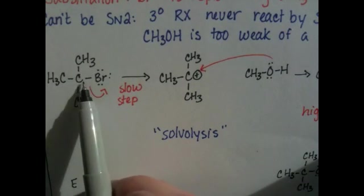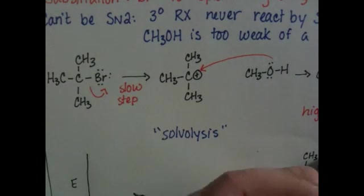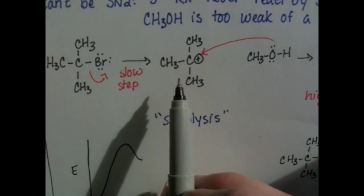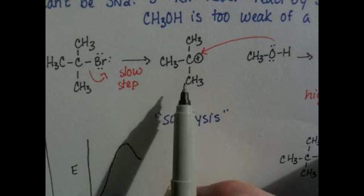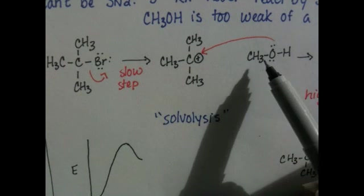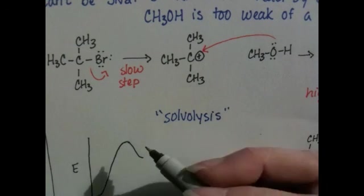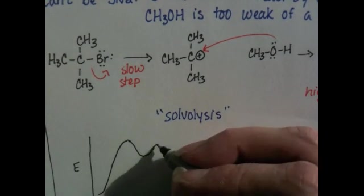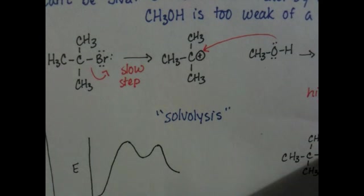We've got, first, the loss of the leaving group, which is the hard step, and that's the one that has the highest activation energy. And that brings us down to this carbocation intermediate. And then, the second step, the attachment of the methanol molecule to form the transition state, and then back down to the product. I drew that as an endothermic reaction. Probably should have drawn it as an exothermic reaction.